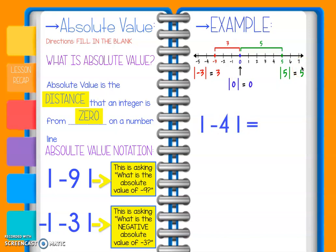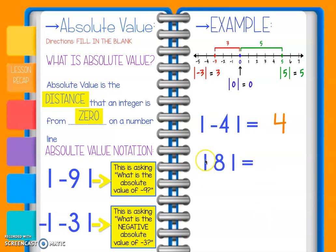Let's look at a few more examples. This one is asking us: what is the absolute value of negative 4, or how many spaces on the number line is negative 4 from 0? And it is 4 spaces. This one says: what is the absolute value of positive 8? If we looked at a number line, 8 is 8 spaces away from 0, so it's a positive 8.